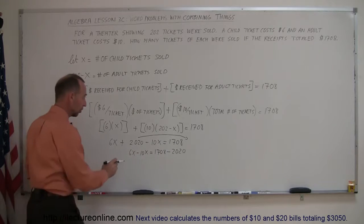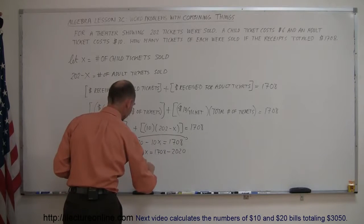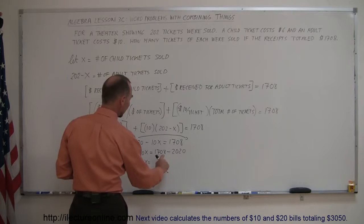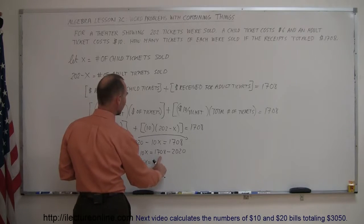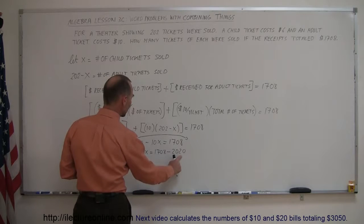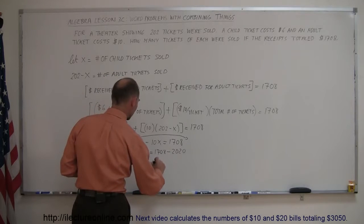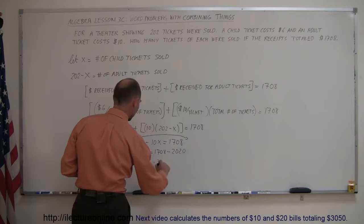Now, we combine like terms. So, this is minus 4x on the left side equals, and that would be, the difference between this and 2000 is a 292, add another 20, that would be 312. So, minus 312.